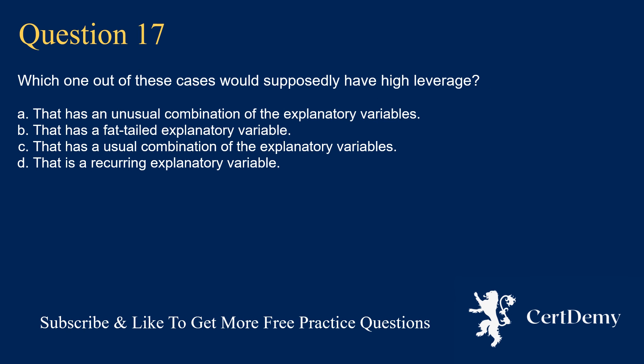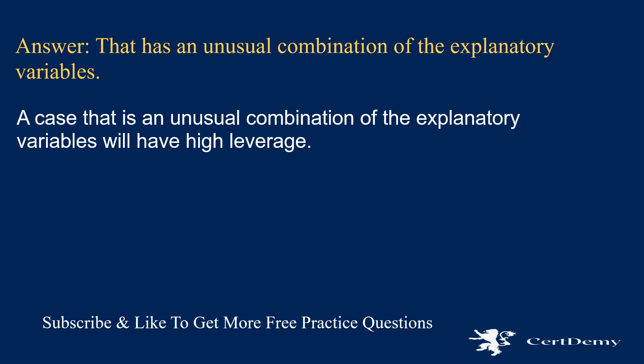Question 17. Which case would supposedly have high leverage? Options: that has an unusual combination of explanatory variables; that has a fat-tailed explanatory variable; that has a usual combination of explanatory variables; that is a recurring explanatory variable. The answer is: that has an unusual combination of explanatory variables. A case that is an unusual combination of the explanatory variables will have high leverage.